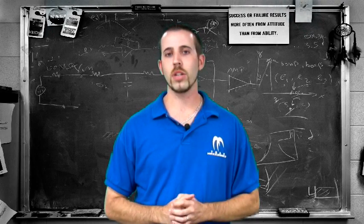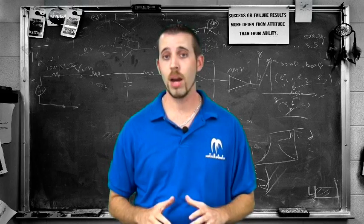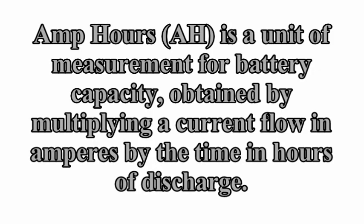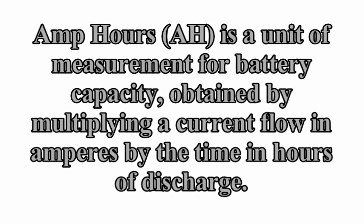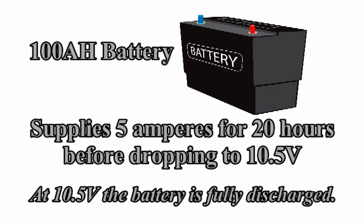That's why batteries are commonly rated in many different ways. The most common way is amp hours. This is a unit of measurement for the battery capacity obtained by multiplying the current flow in amperes by the time in hours of discharge. It is very important to look at the number of hours the battery manufacturer used to determine this value. Here's an example. A battery which delivers 5 amperes for 20 hours delivers 5 amperes times 20 hours or 100 amp hours. So this is a 100 amp hour battery and it can supply 5 amp hours per hour for 20 hours before dropping to 10.5 volts.